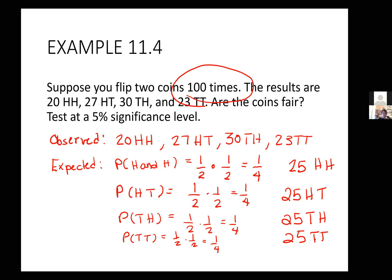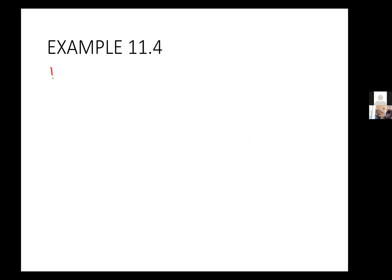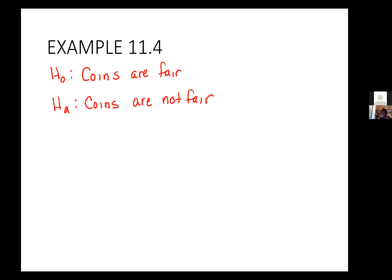The number of degrees of freedom — let me write my hypothesis first. My null hypothesis is that the coins are fair. My alternative hypothesis is that they aren't. I'm going to determine whether to reject or not reject the null hypothesis, so I need to put this information in my calculator and conduct a test.